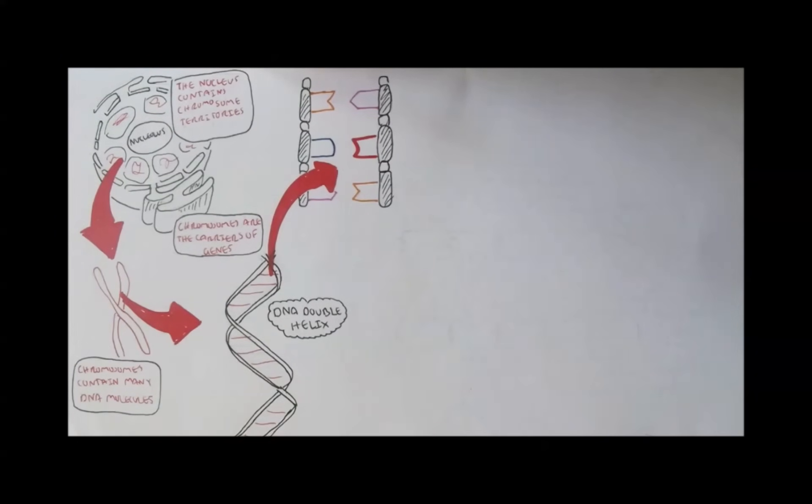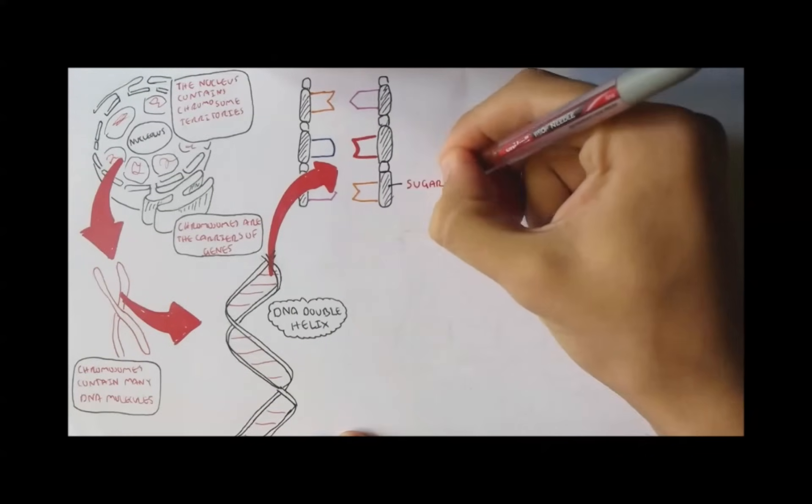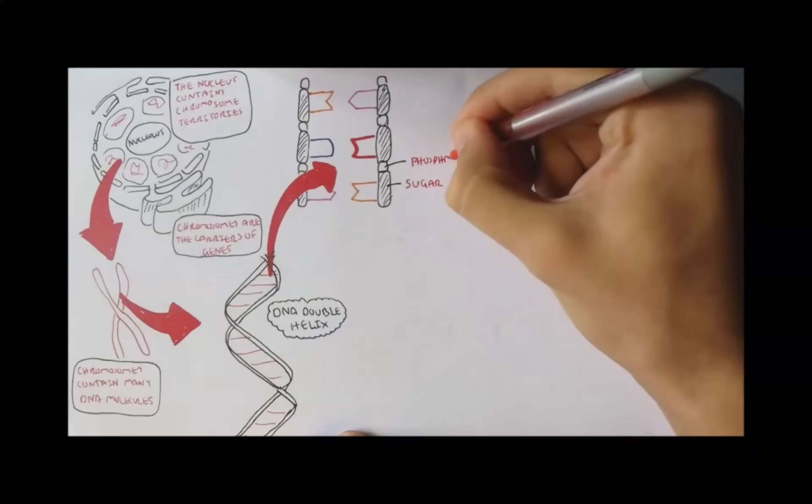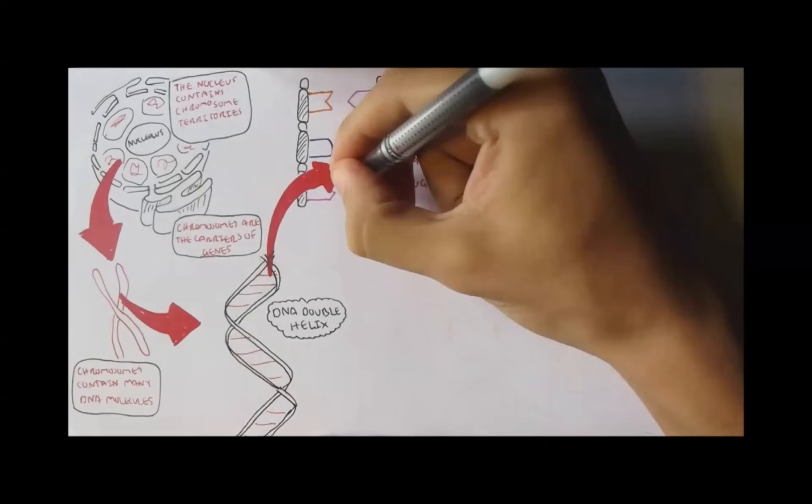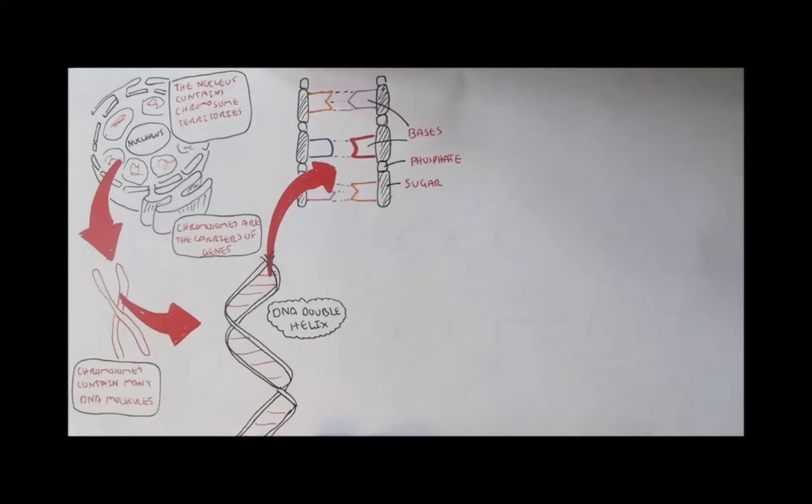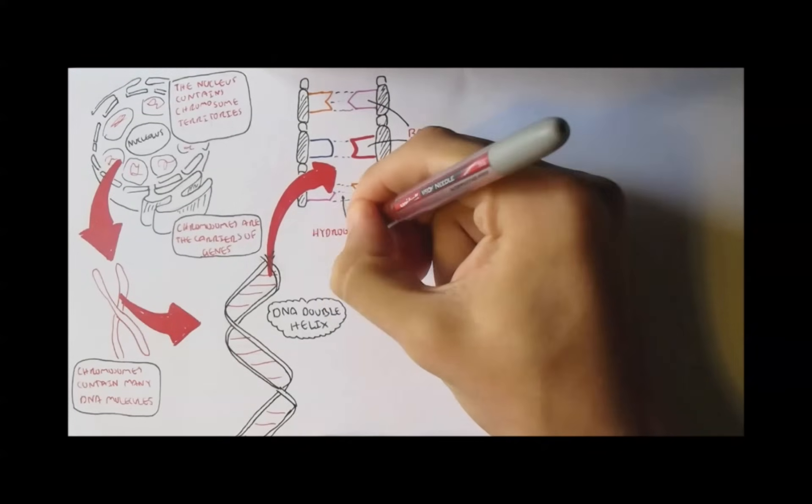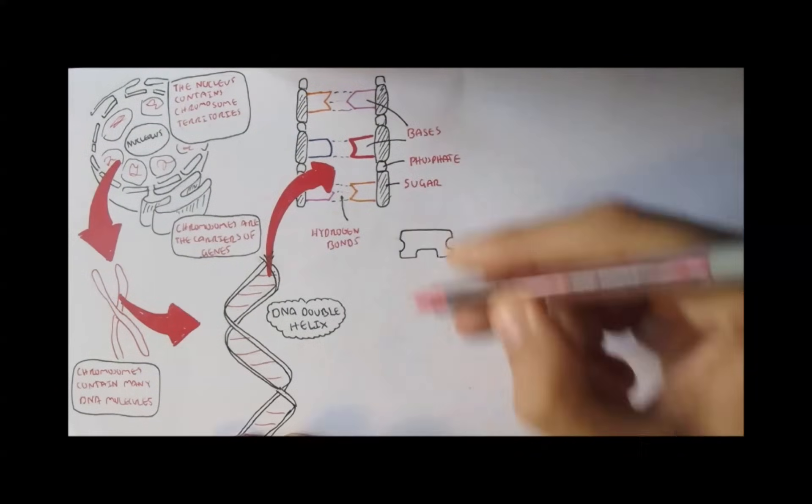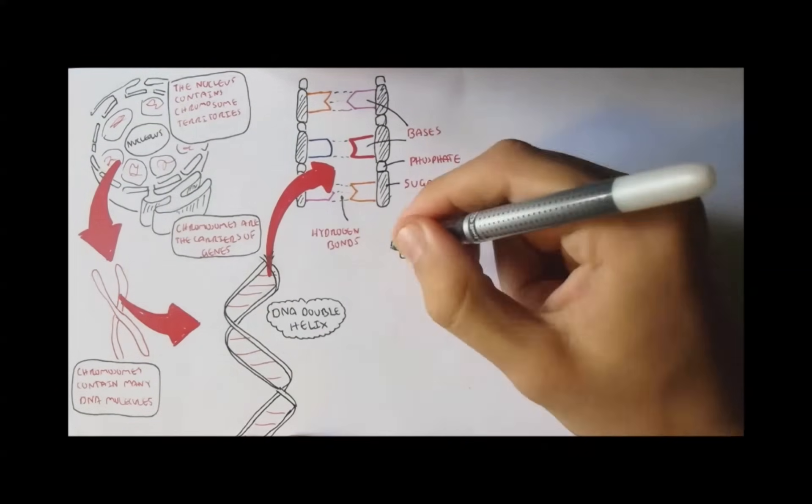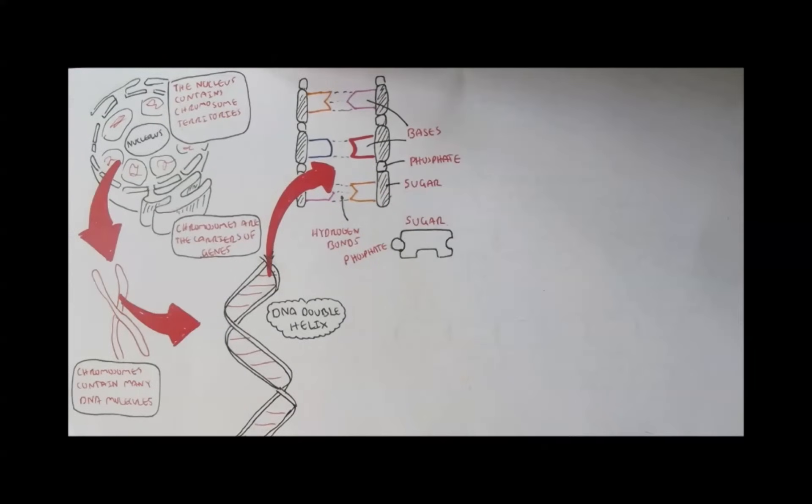DNA is made up of nucleotides. What are nucleotides? If we lay the two DNA strands side by side, we can see a repetition of sugar and phosphate molecules. Attached to the sugar and phosphate molecules, we can also find what's called a base. Now the sugar plus the base plus the phosphate is what we call a nucleotide.